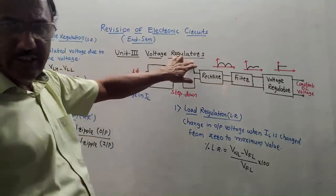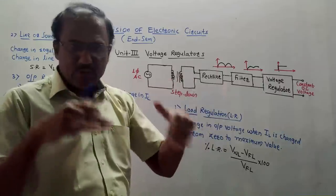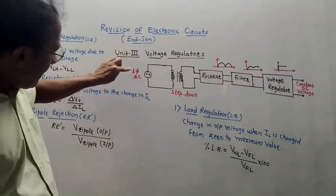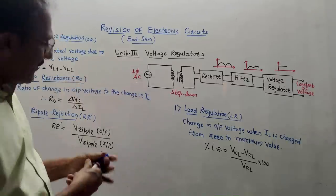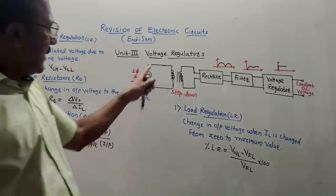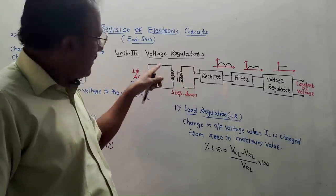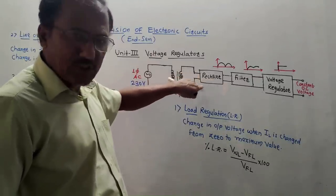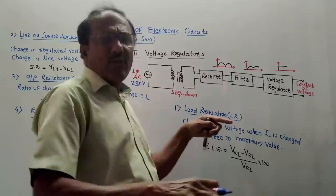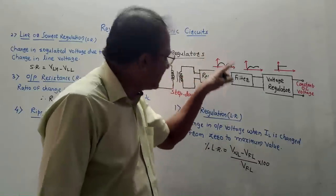Unit number 3 is voltage regulator. As the name indicates, the function of a voltage regulator is to provide regulated output voltage, that means constant output voltage. This is the block diagram of the voltage regulator. At the input side we are applying single phase AC circuit — the standard value of single phase AC voltage is 230 volts. Initially we use a step-down transformer, then its output is given to a rectifier — usually a bridge rectifier or full wave rectifier — giving a pulsating DC signal.